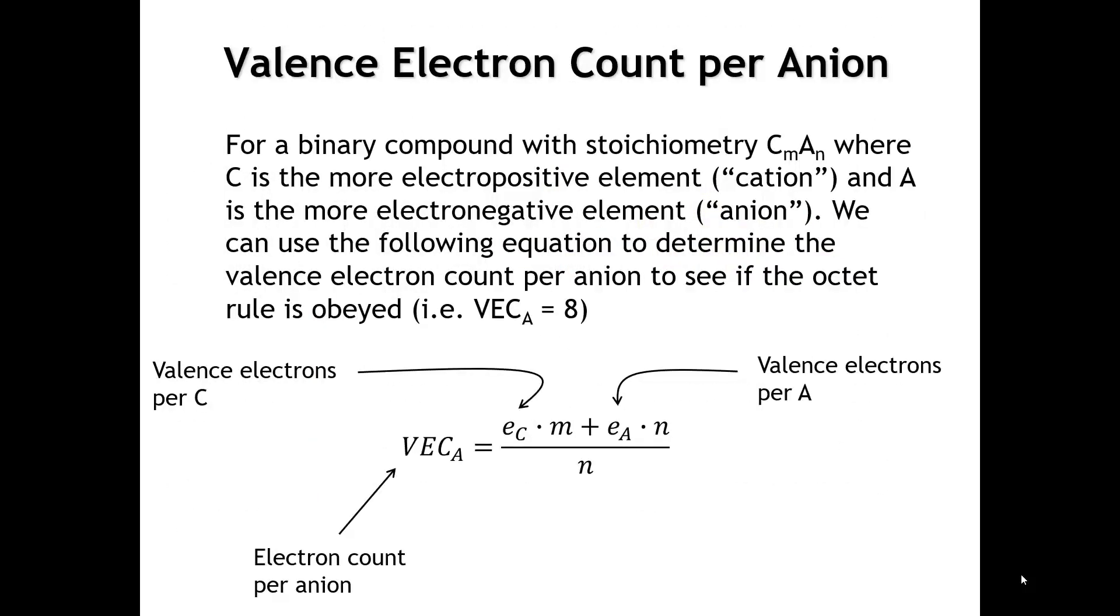Now, we can put an electron count argument to this in general binary compound. We're going to say there's a more electropositive element, which we're going to call C, and I'll call that a cation, in air quotes, and a more electronegative element, which we call A, which I will refer to as an anion, in air quotes. Now, we can figure out a lot about what the bonding and the structure is going to be if we think about something called the valence electron count per anion.